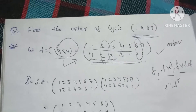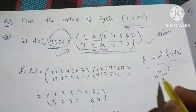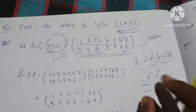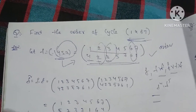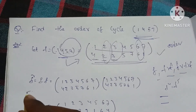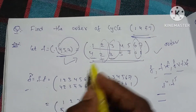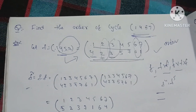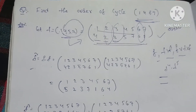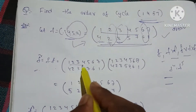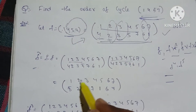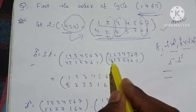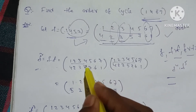Now we compute F² = F∘F. The same value is equal. Let's compute F² = F into F. So F is equal — working element by element. The elements are 1, 2, 3, 4, 5, 6, 7. 1→4, 4→5.